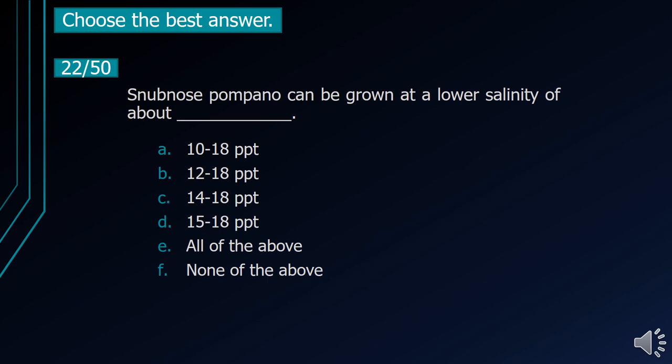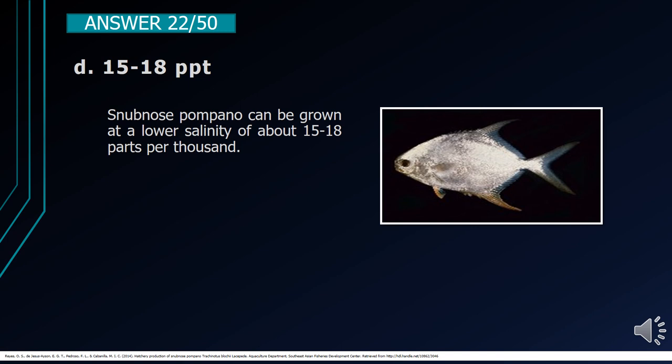Number 22. Snubnose pompano can be grown at a lower salinity of about blank. A. 10–18 parts per thousand. B. 12–18 parts per thousand. C. 14–18 parts per thousand. D. 15–18 parts per thousand. E. All of the above. F. None of the above. The correct answer is letter D, 15–18 parts per thousand. Snubnose pompano can be grown at a lower salinity of about 15–18 parts per thousand.